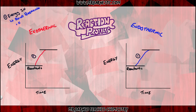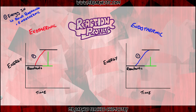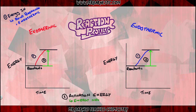Bond breaking is endothermic. The energy taken in — the difference between the reactant energy level and the top of the curve — is called the activation energy, which is the energy needed to break the bonds.